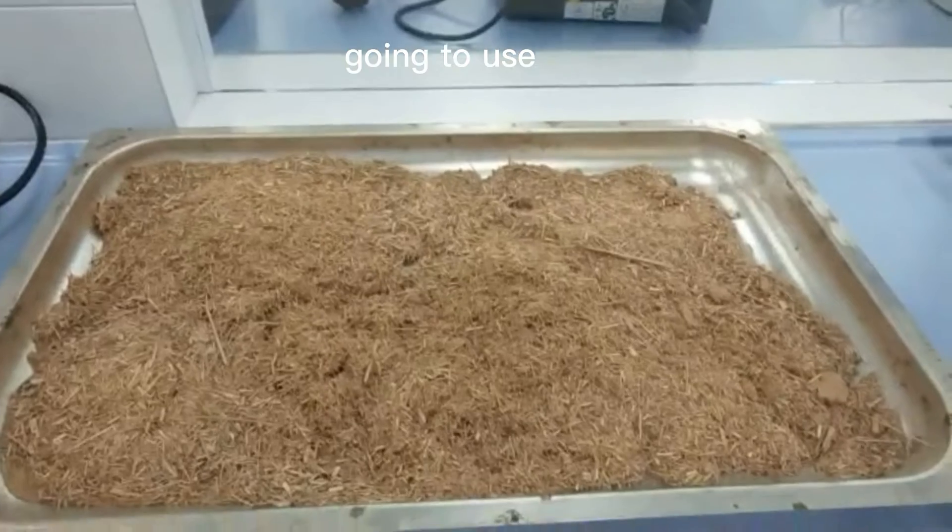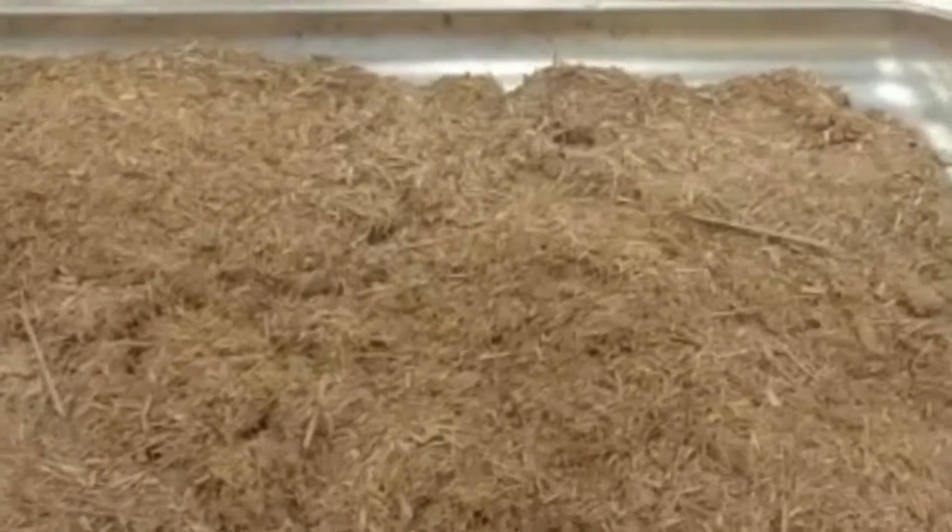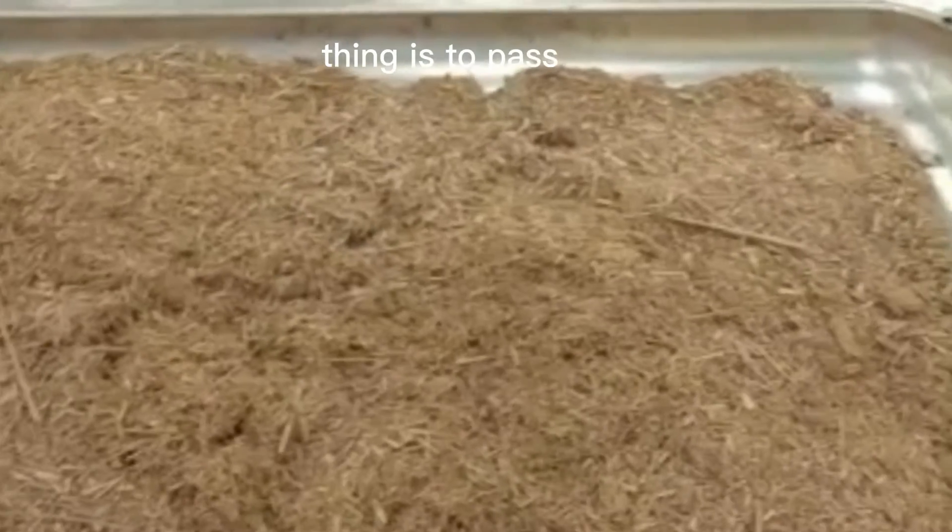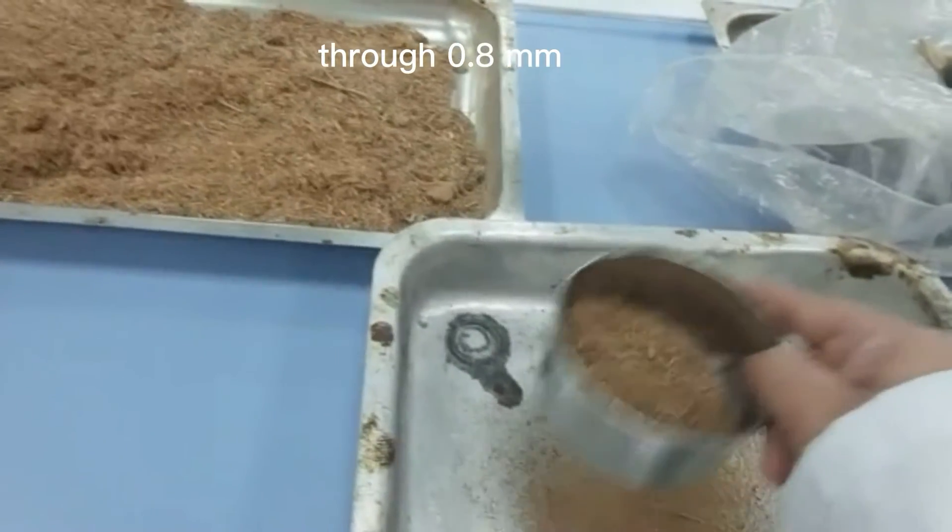The feedstock we are going to use for the production of magnetic biochar is date palm. So the first thing is to pass the date palm through 0.8mm mesh size.